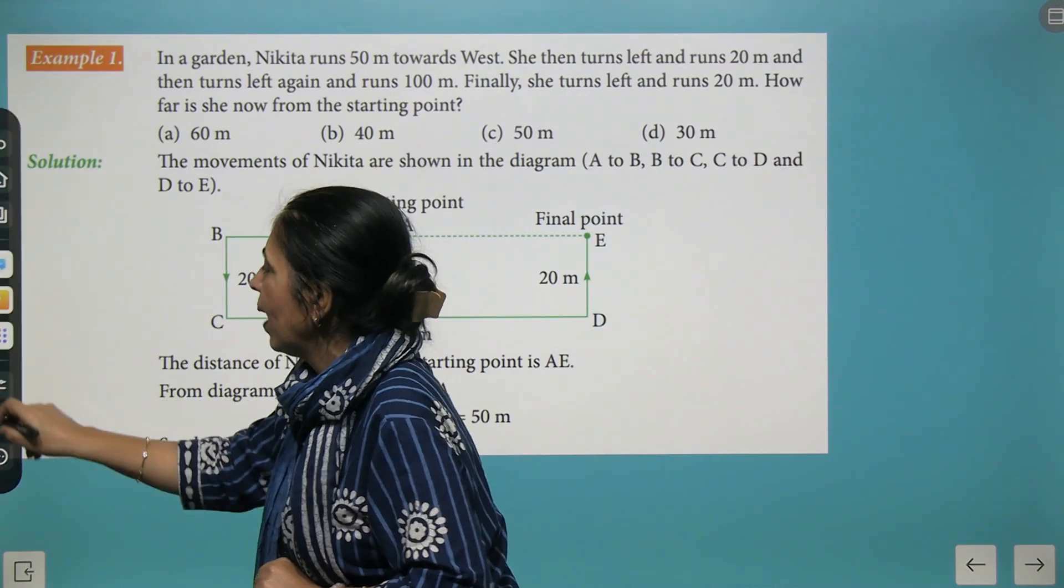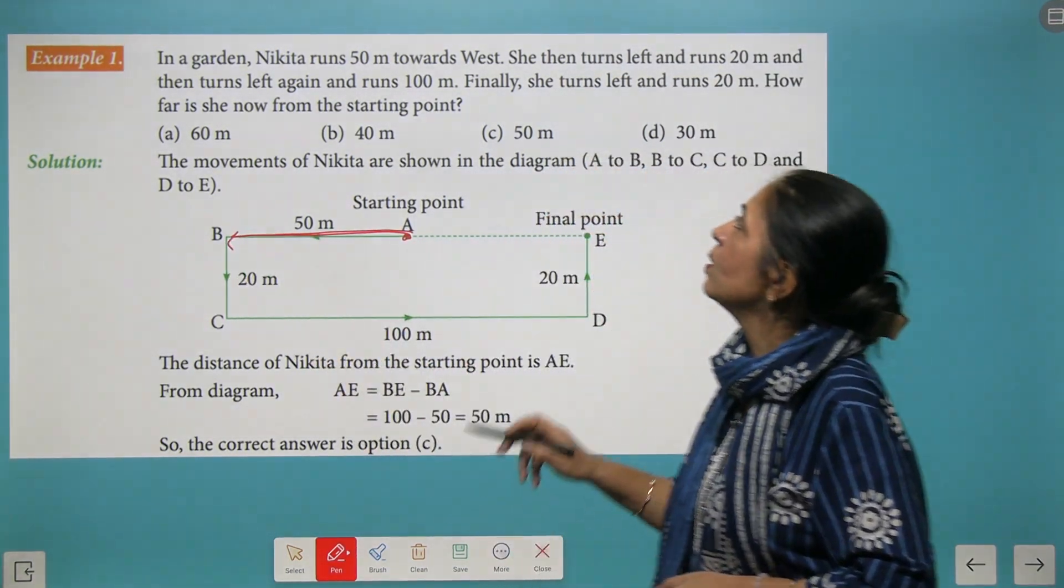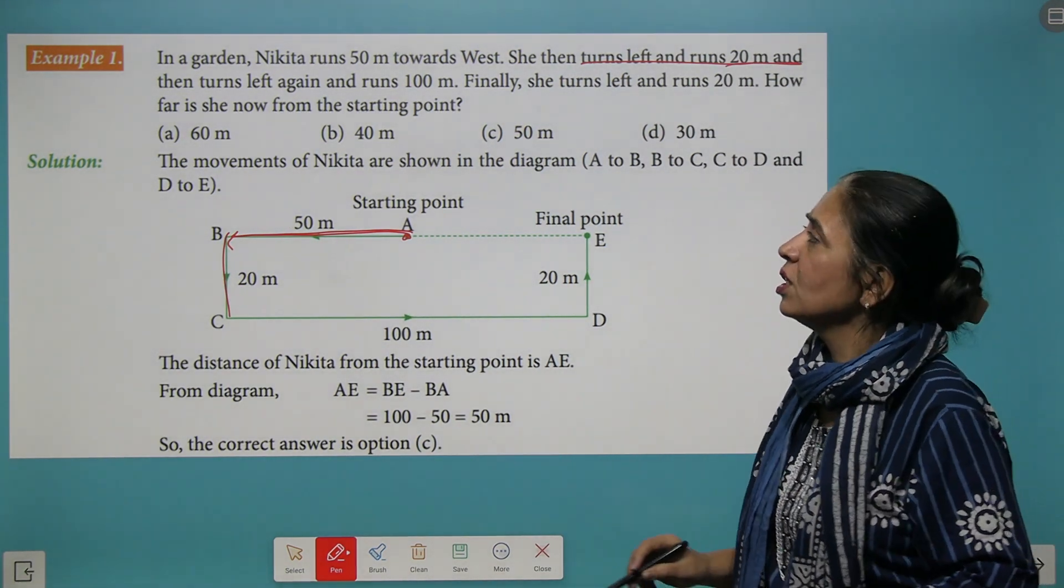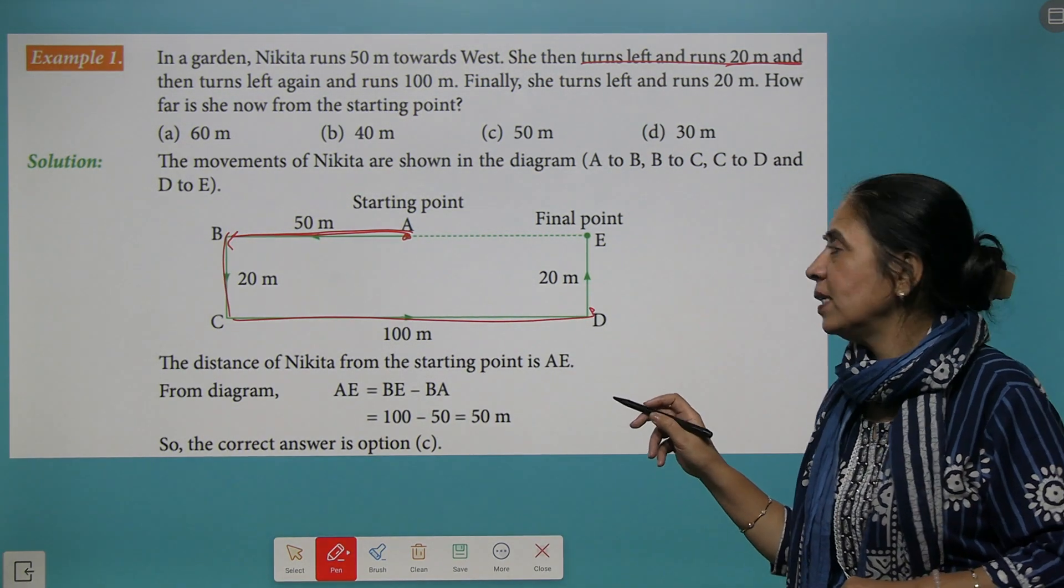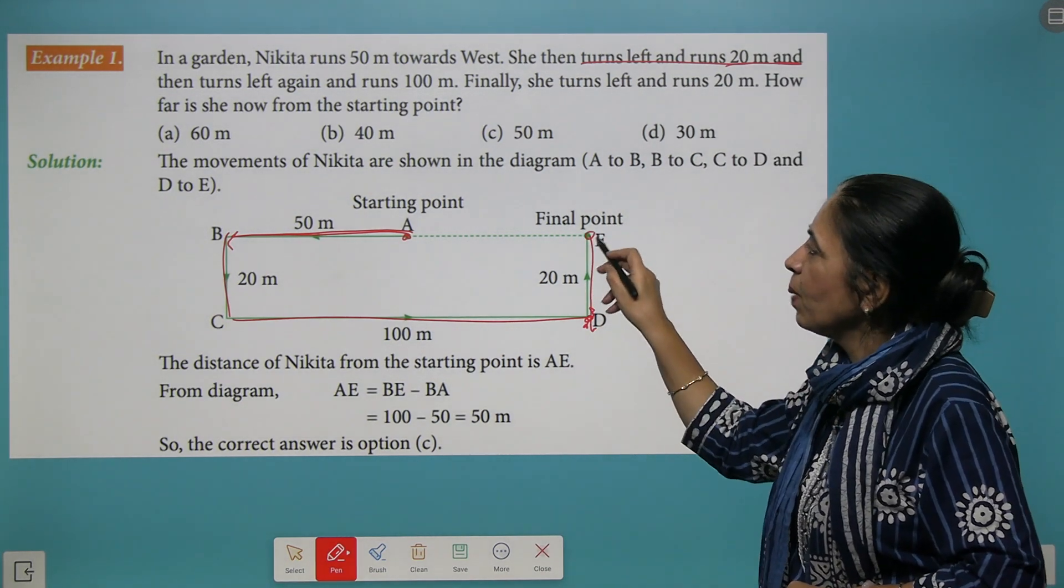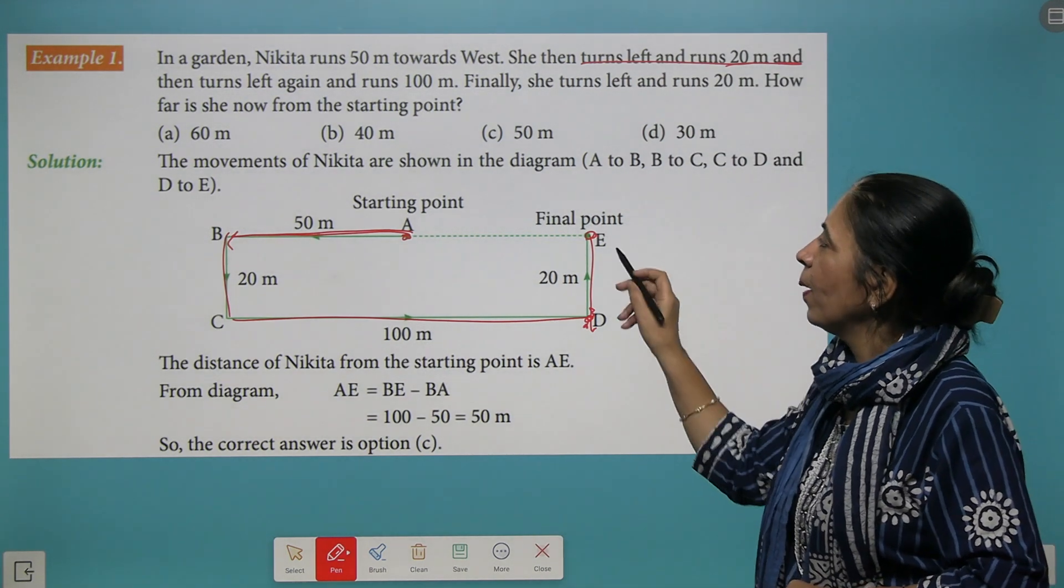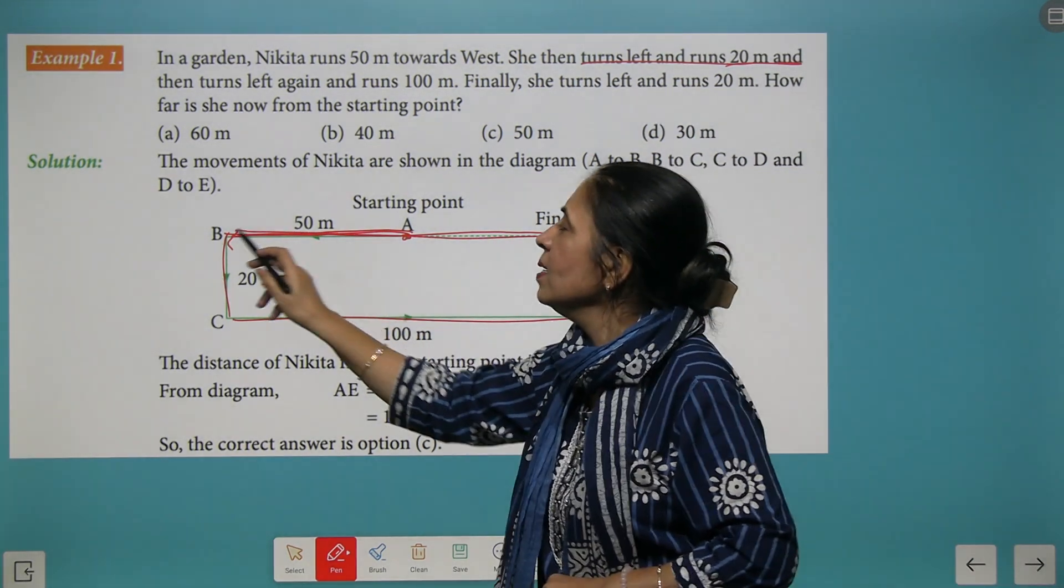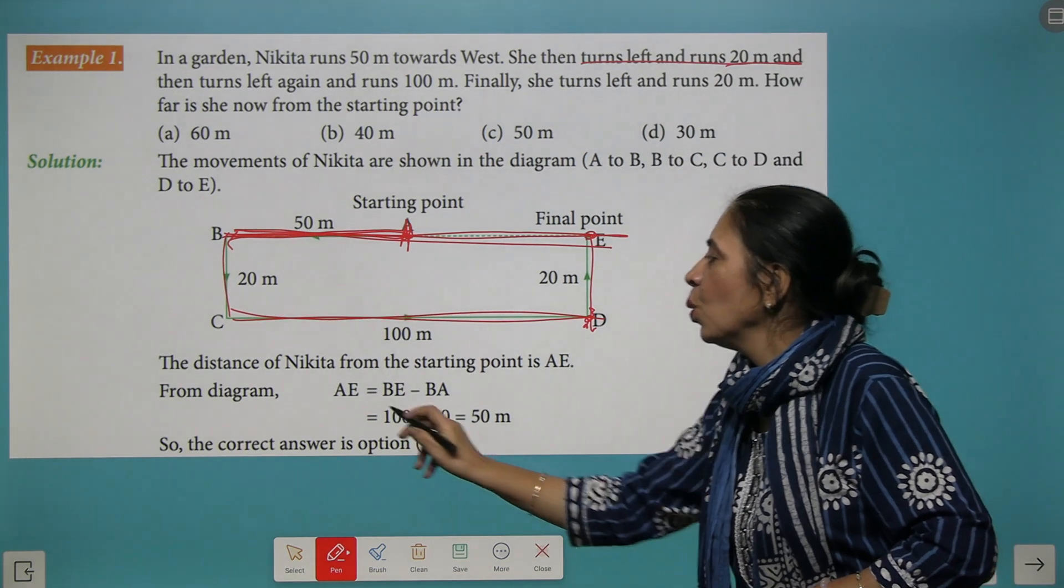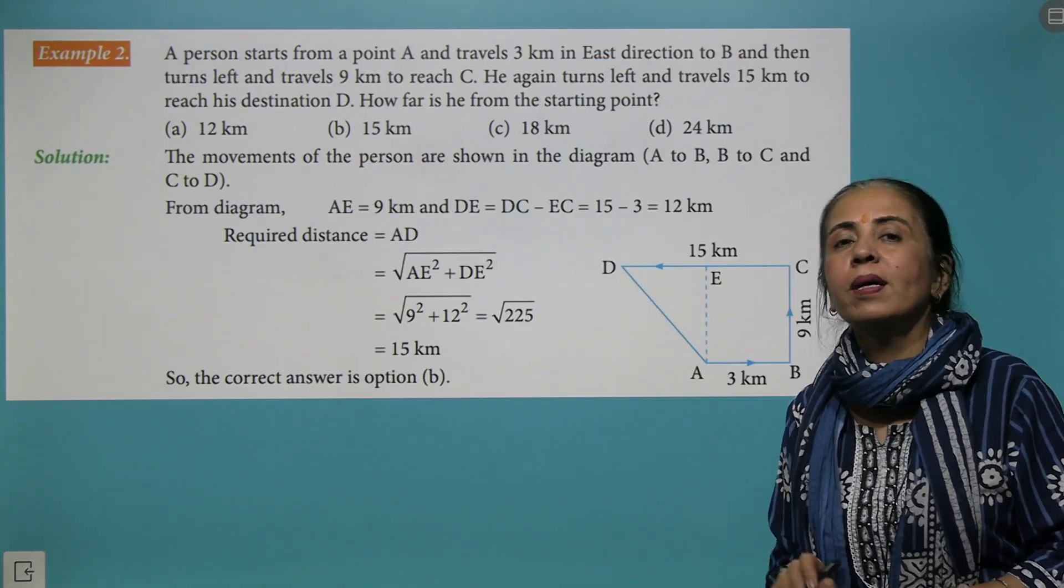Take another question. In a garden, Nikita runs 50 meters towards west. This is the starting point of Nikita. She is moving 50 meters towards west, then turns left and moves 20 meters, then turns left again and runs 100 meters. From this point she turns left and runs 20 meters. This becomes her final point. How far is she from her starting point? We simply find this distance: this is 100 and this is 50. We write BE minus BA, 100 minus 50, and she is just 50 meters away from her starting point.